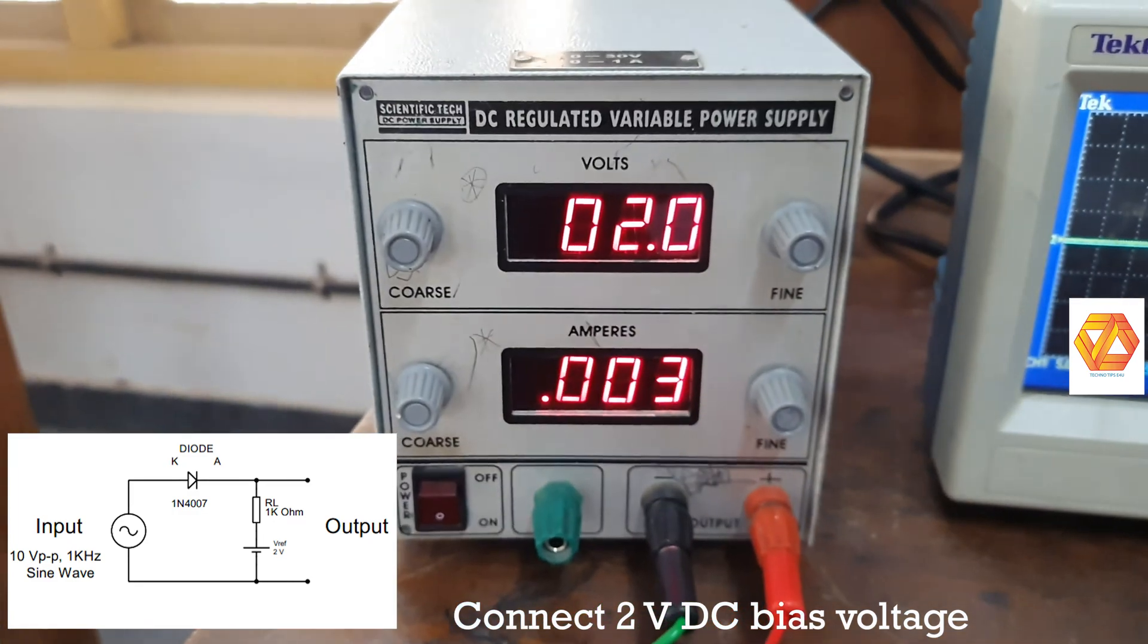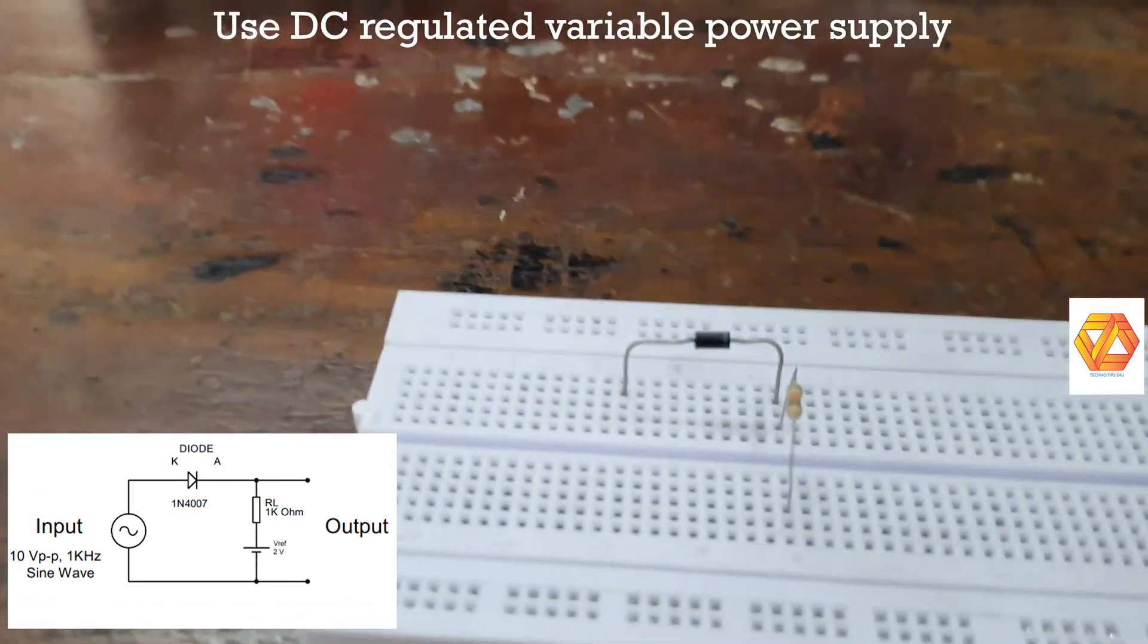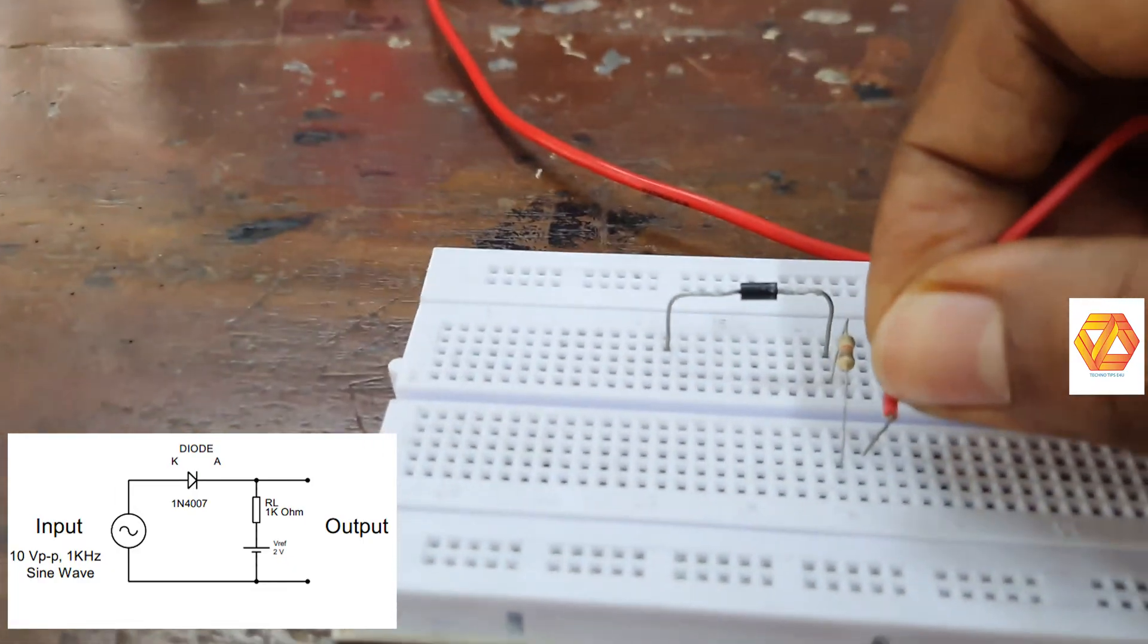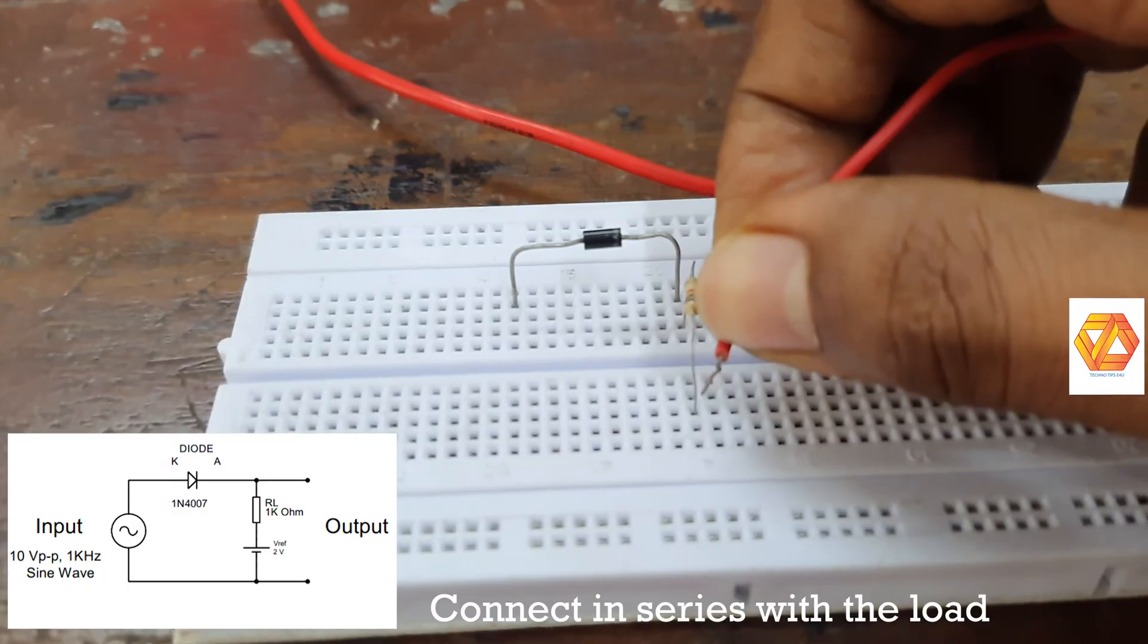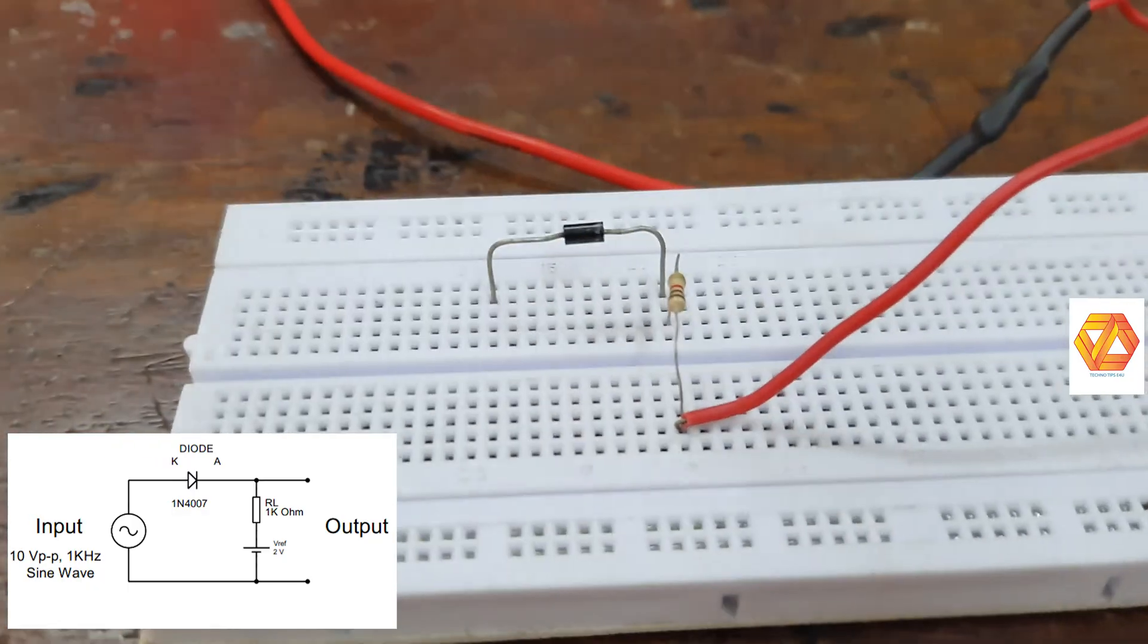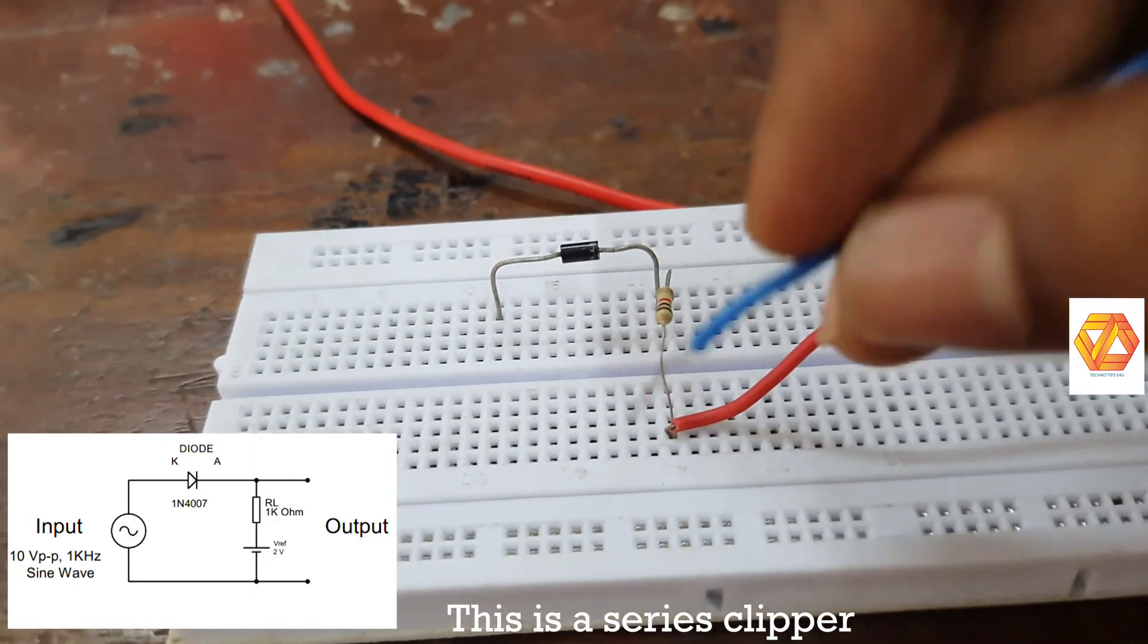Voltage in series with the load resistor. Red is the positive terminal of regulated DC power supply and blue wire is the negative terminal of the regulated power supply.